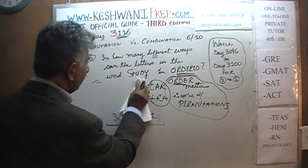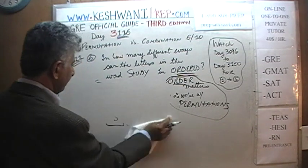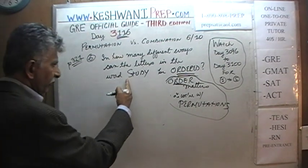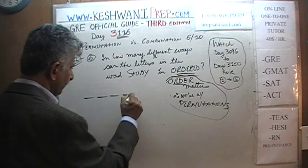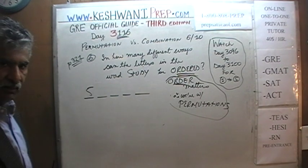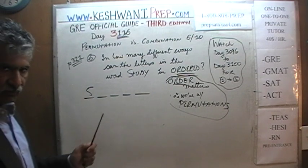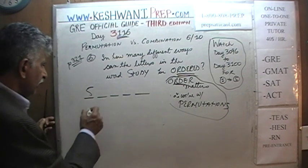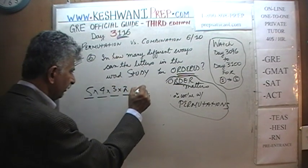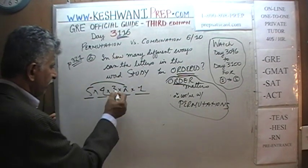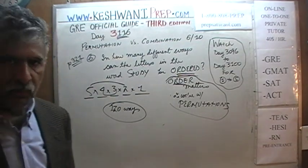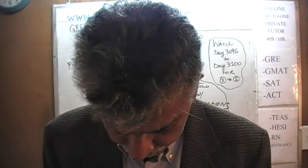Now for STUDY there are five objects: S, T, U, D, and Y. We arrange them where order matters — it's not a combination. How many ways can we fill the first position? Five choices. After the first, four people remain. Then three, then two, then one. Five times four is twenty, times three is sixty, times two is 120. There are 120 different ways that the letters in the word STUDY can be ordered.